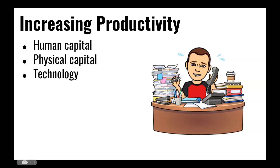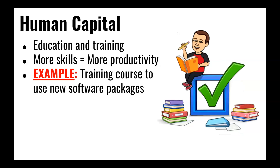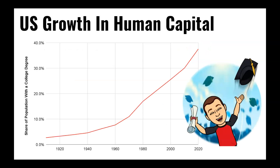What causes increases in productivity? Human capital, physical capital, and technology. Improvements in each of those three will help an economy see sustained economic growth. When it comes to human capital, we're talking about the education, training, knowledge, and skills that workers have. Taking a course in how to use new software can free up your time so that instead of hand-writing or hand-calculating, you can use a spreadsheet or word processor to create more work more quickly — more output for the same amount of time. Within the United States, human capital improvements have been rampant; college degree attainment went from about 2–3% in the early 1920s to nearly 40% today.